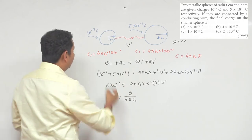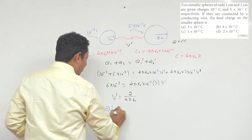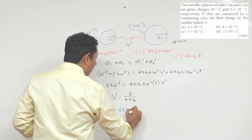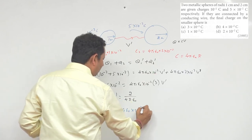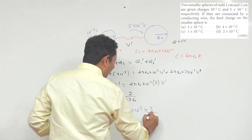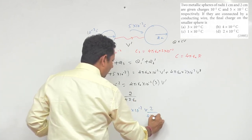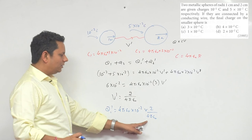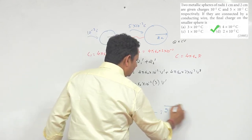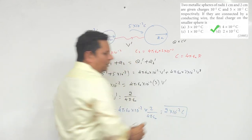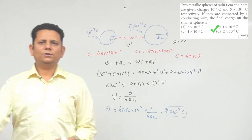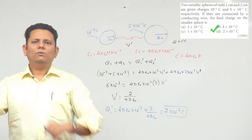The final charge on the small sphere, q1 dash, equals 4 pi epsilon-not multiplied by 10 to the power minus 2, multiplied by the common potential 2 divided by 4 pi epsilon-not. The 4 pi epsilon-not cancels out, so the final charge is 2 into 10 to the power minus 2 coulomb. Based on this, option number D would be the right choice.